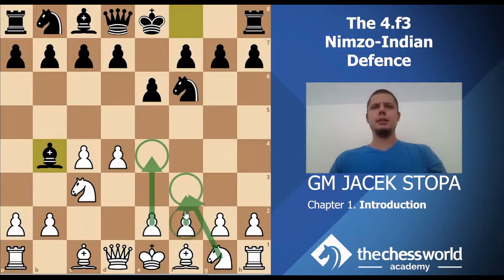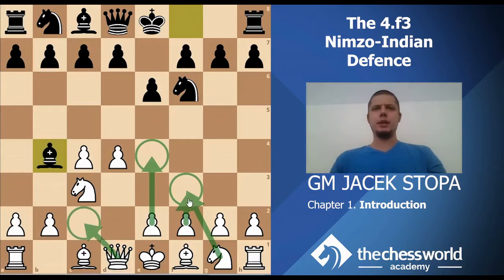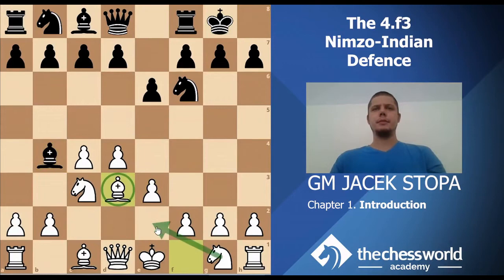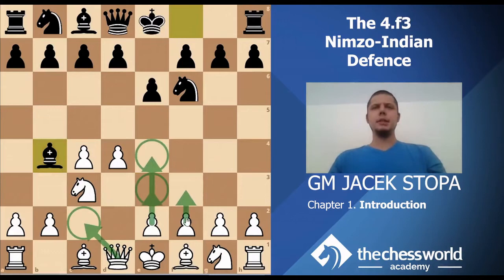F3 is just not exactly the most natural move to make. I'm sure you know that queen c2, knight f3, or e3 are more natural and more popular moves. So why f3?